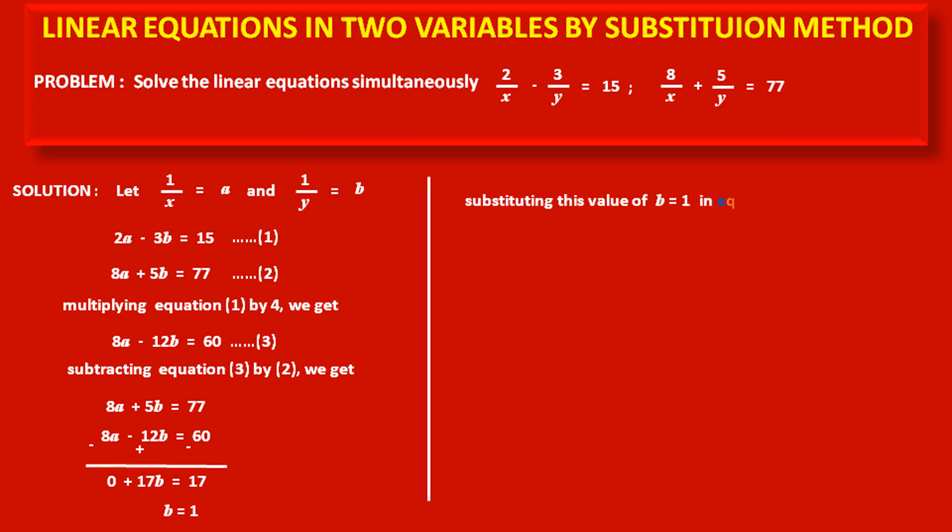Now, substituting b = 1 into equation (1): 2a - 3(1) = 15, so 2a - 3 = 15.